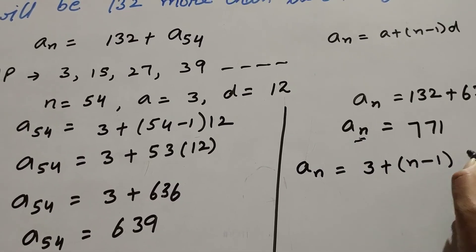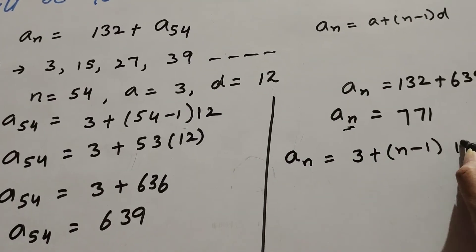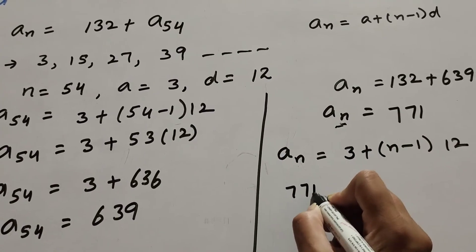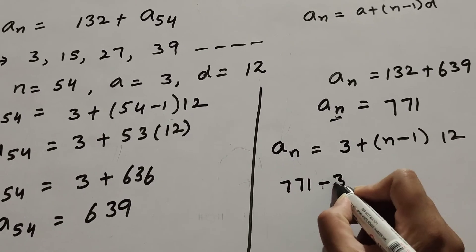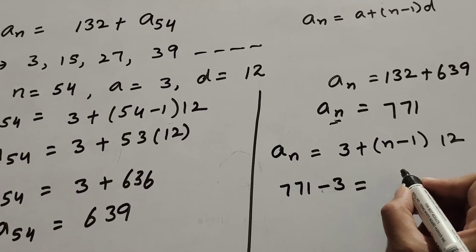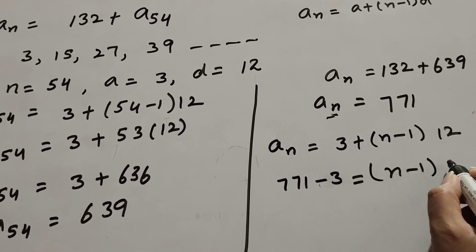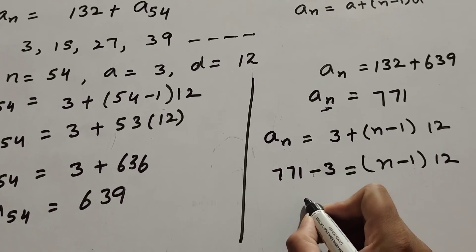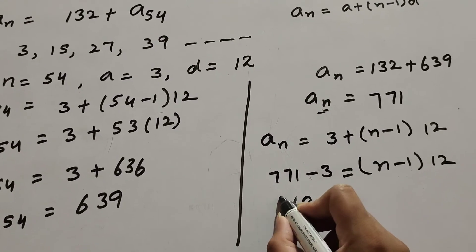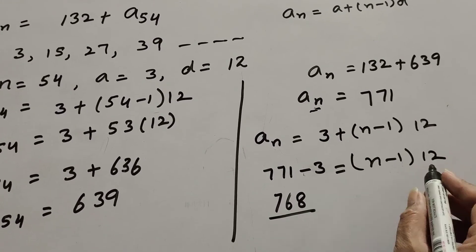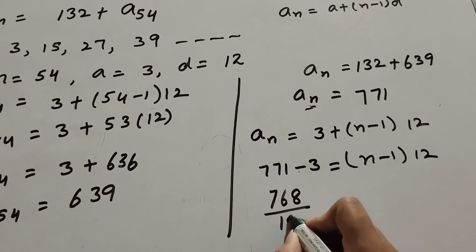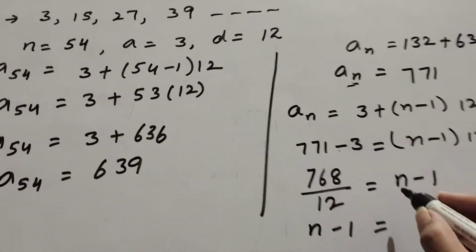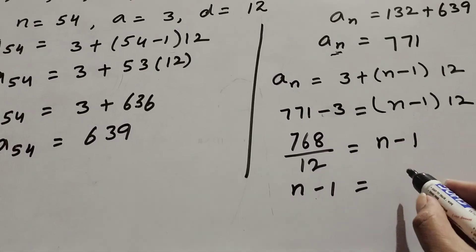Using the formula, 771 minus 3 equals (n − 1) into d, where d is 12. So 771 minus 3 equals 768, and transposing 12 to the left hand side, n minus 1 equals 768 divided by 12, which gives us 64.